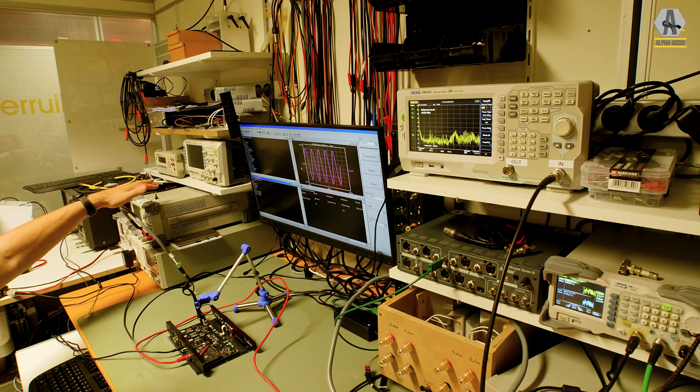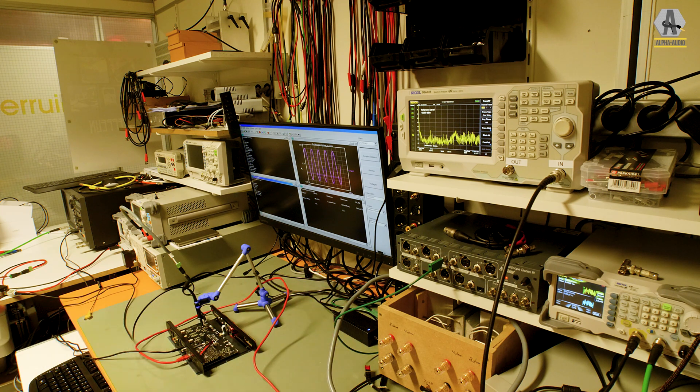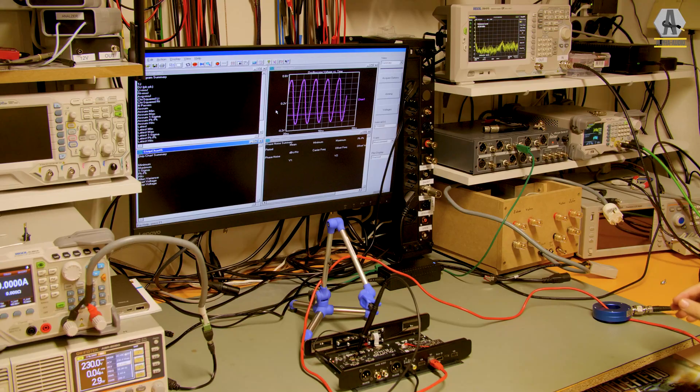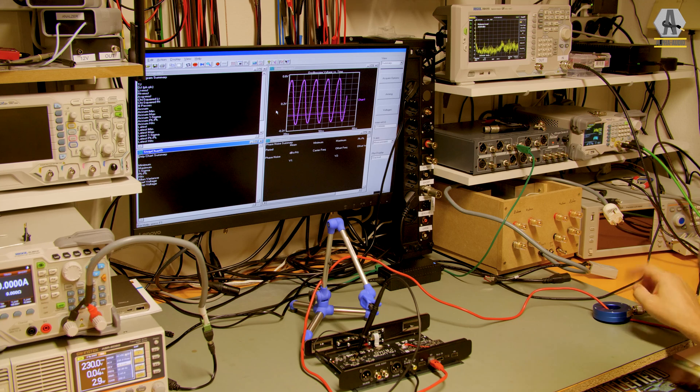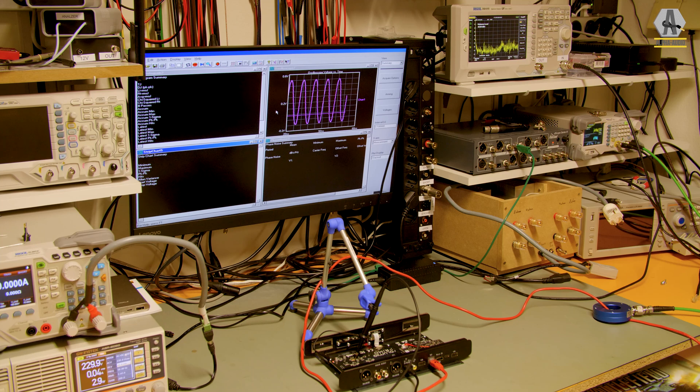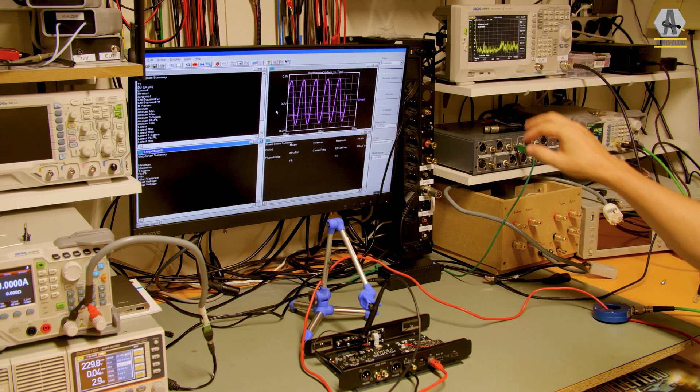This is our electronic load. It's connected to a switch mode power supply that we're going to use later and we see a current probe right here. The ethernet cable runs through it but I'm going to use it to inject noise later. This cable goes into our CDN, it's a coupling decoupling network for the network to analyze common mode noise on the ethernet cable.